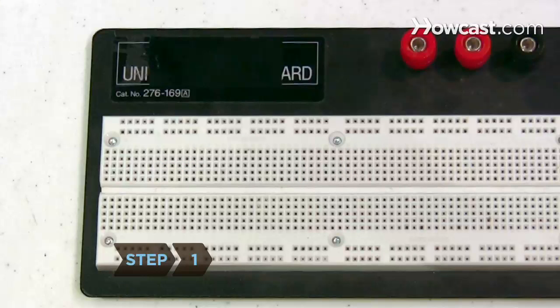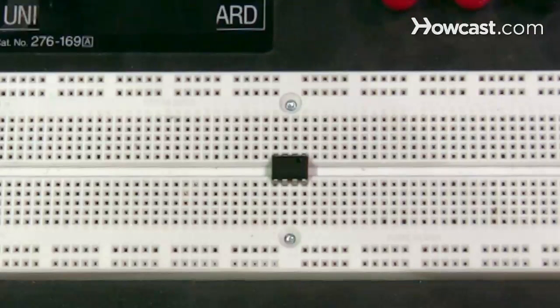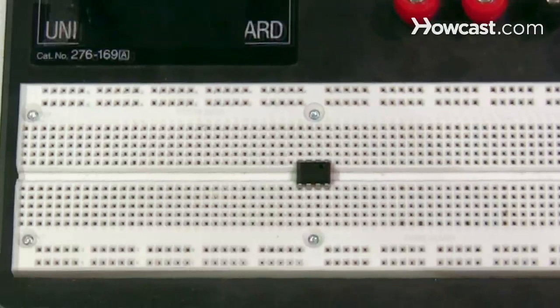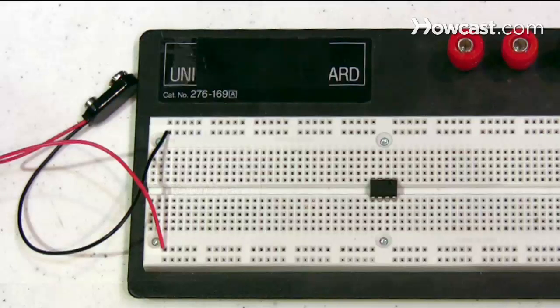Step 1: Set up the components temporarily on the breadboard. Start by placing the 555 timer on the board so the two rows of pins fit into the holes on both sides of the gap in the middle. Connect the negative 9-volt terminal to the bottom row of holes using wire. Connect the positive terminal to the top row of holes.